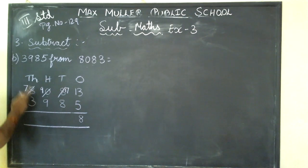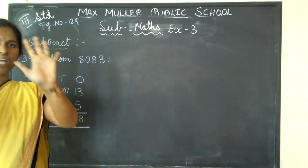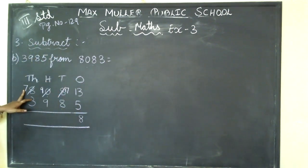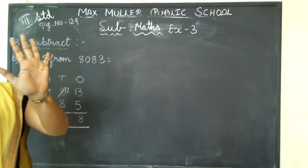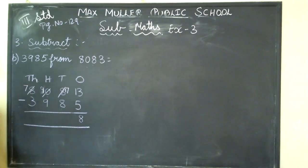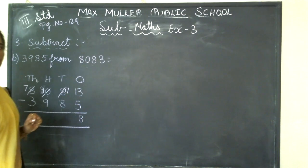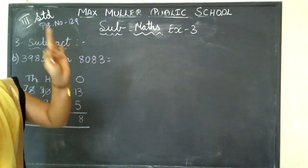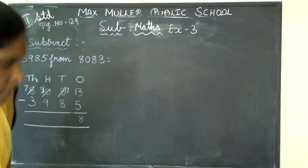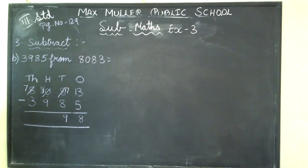So I cannot borrow from 0. I will go to the thousands place — 8. From 8 if I minus 1, answer 7 — write 7. I will carry to the hundreds place — it will become 10. From 10 if I minus 1, how much? 9 — write 9 in the hundreds place. I will carry to the tens place. From 17 if I minus 8 — start counting backwards: 17, 16, 15, 14, 13, 12, 11, 10 — the next number is 9. In the tens place, 17 minus 8 is 9 — write 9.